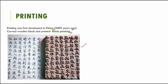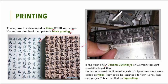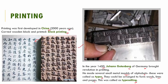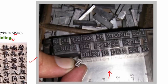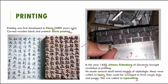In the year 1450, Johan Gutenberg of Germany brought a revolution to printing. He made several small metal molds of different alphabets, which he called 'types'. These types could be arranged to form words, lines, paragraphs, and pages — a process called typesetting. You can see in this picture a person typesetting a paragraph by arranging individual types into sentences. This was much easier and quicker compared to making a whole carved block.